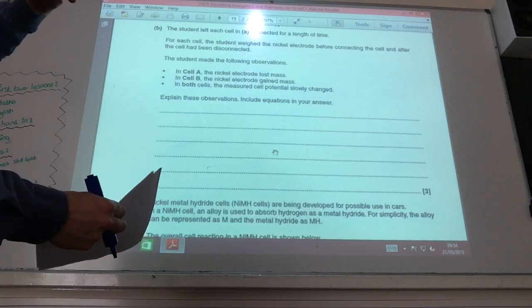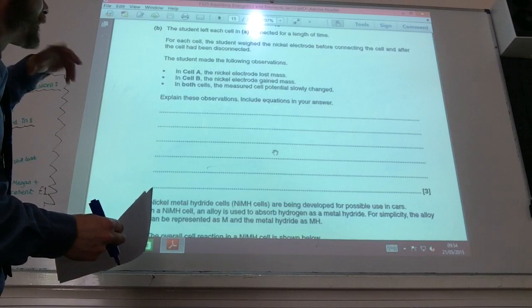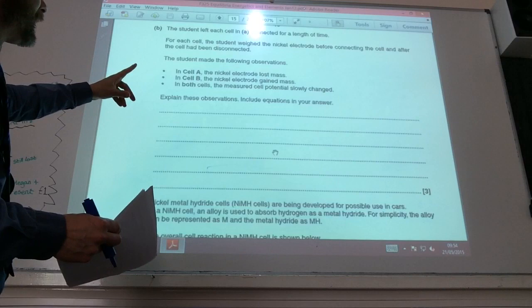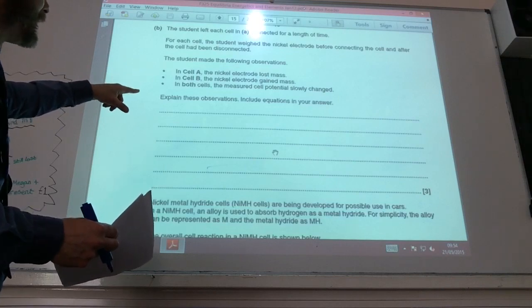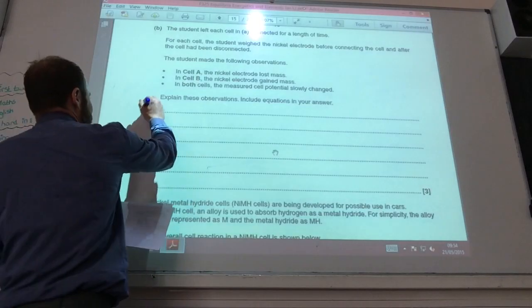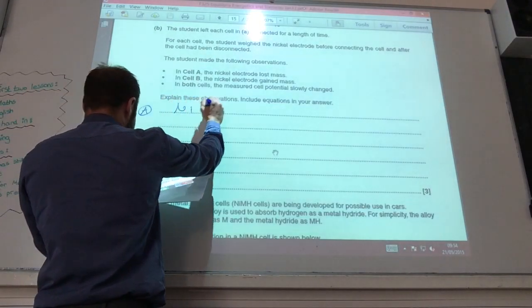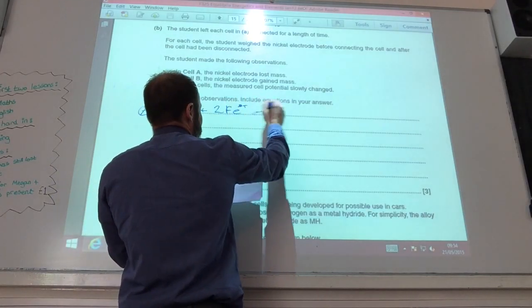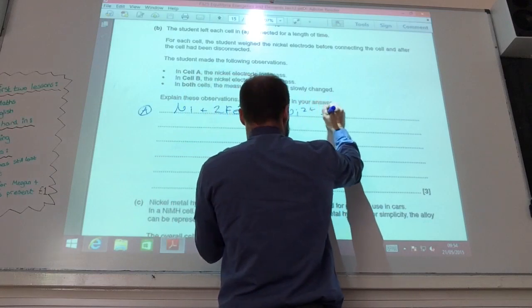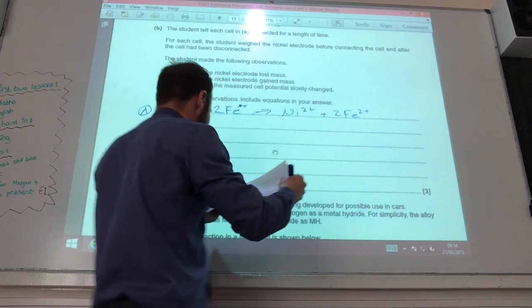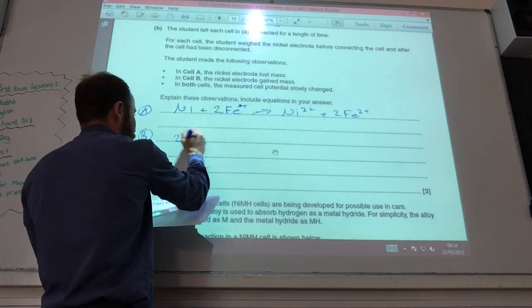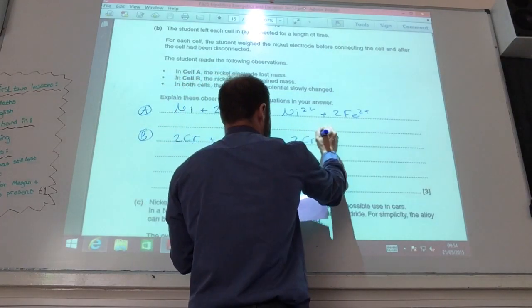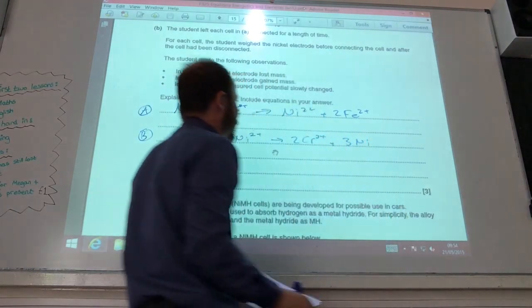Okay, so to this next one. The student left the cell in a connector for a long while. So actually a reaction was happening now. Nickel electrode lost mass in cell A and gained mass in cell B. So what's going on? Well, for cell A we have this reaction happening. If we do our equations. For cell B we have this reaction. That reaction will be happening.